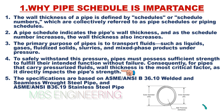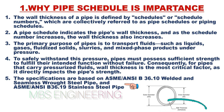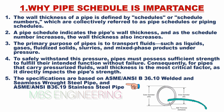Consequently, for pipes that carry pressurized fluids, wall thickness is the most critical factor as it directly impacts the pipe's strength. The specifications are based on ASME/ANSI B36.10 for welded and seamless stainless steel pipe, and ASME/ANSI B36.19 for stainless steel pipe.